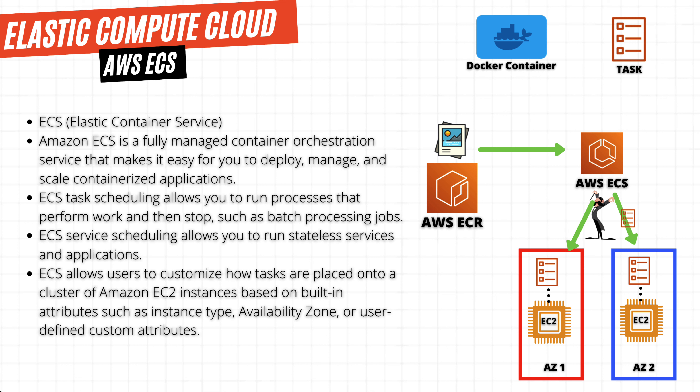ECR is a private registry in AWS that is used by ECS or Fargate. ECS can grab the images and then run them for your workload. These tasks run on EC2 instances.